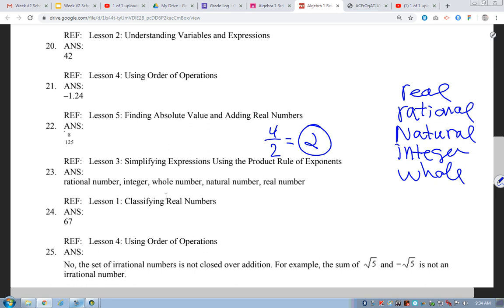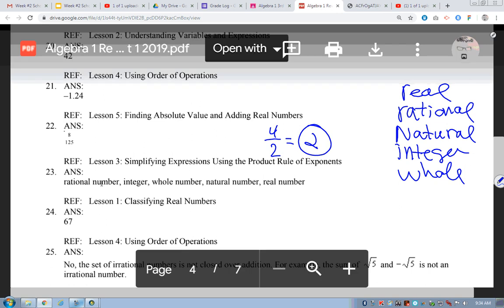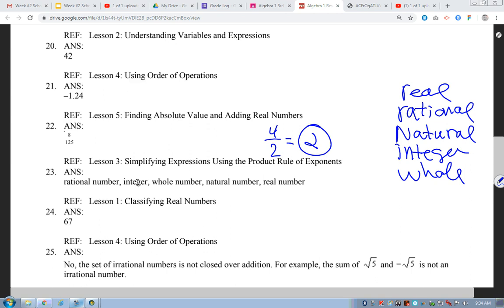Okay? Alright. So, let's see if we fit rational, integer. So, I should have had integer. Let's see. It should have been rational, integer, whole, natural. So, they've got some things that I think are a little out of order. Real should have been towards the top. But, integer, whole, and natural. Okay? Alright. Does that answer that for you?